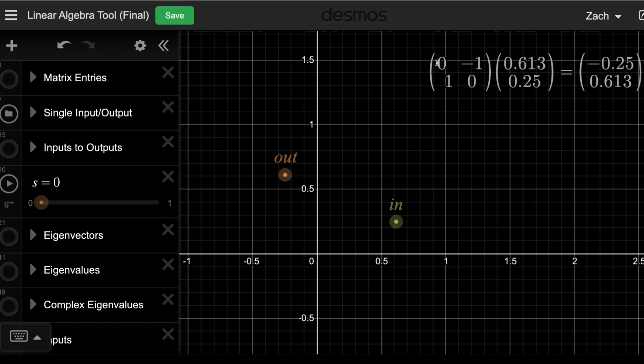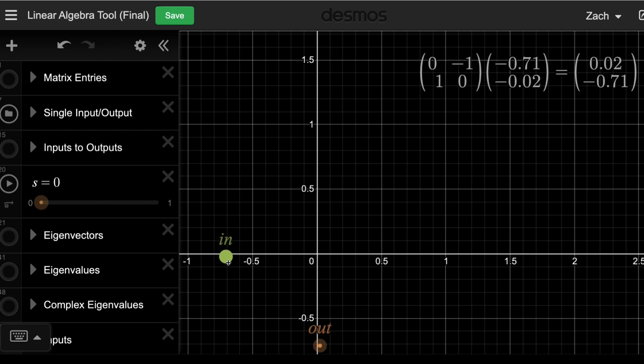Here we have a 2x2 matrix, and then an input vector plotted here, and the output vector also plotted. Then you can manually move around the input and see how the output will move with it.